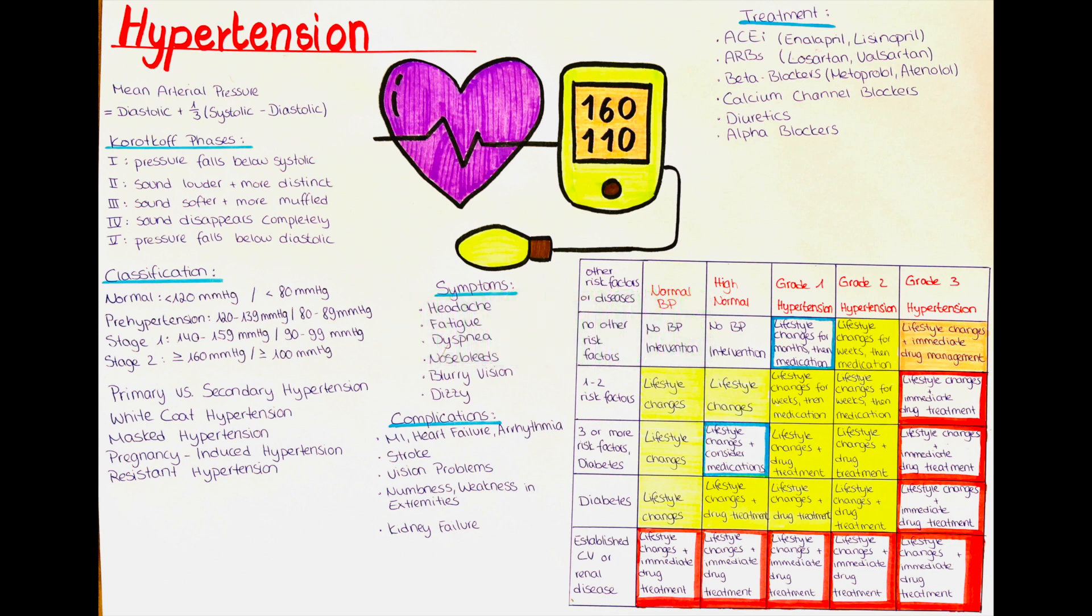What are medications that we commonly prescribe to treat hypertension? ACE inhibitors, or angiotensin-converting enzyme inhibitors, like enalapril and lisinopril, work by blocking the conversion of angiotensin-1 to angiotensin-2. This leads to vasodilation and reduced blood pressure. They are prescribed for conditions such as heart failure, left ventricular dysfunction, post-myocardial infarction and diabetic nephropathy, among others. Remember, ACE inhibitors should be avoided in cases of renal artery stenosis.